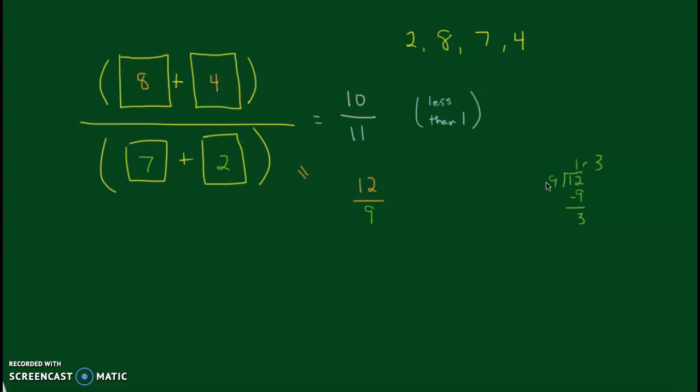The number before our remainder is our whole number. The remainder is our numerator. And then the divisor is always the denominator. So, one and three-ninths.